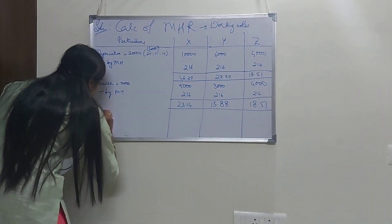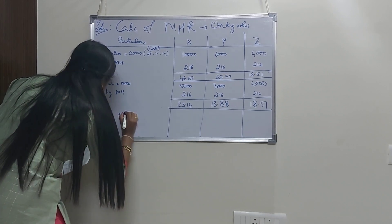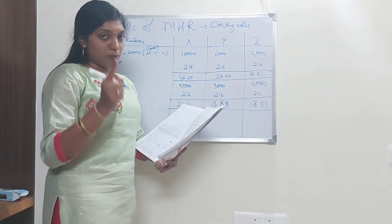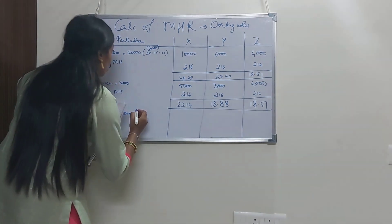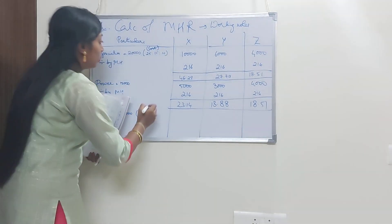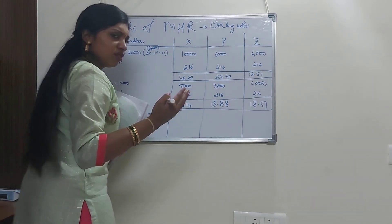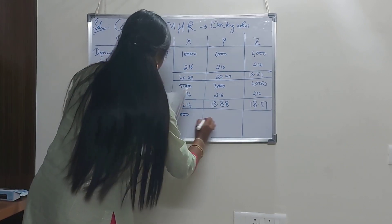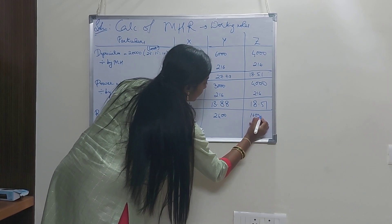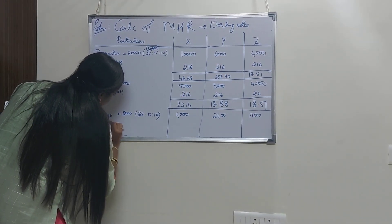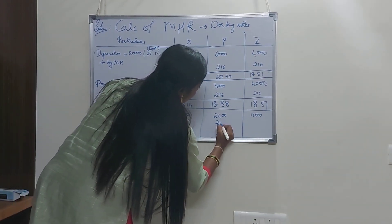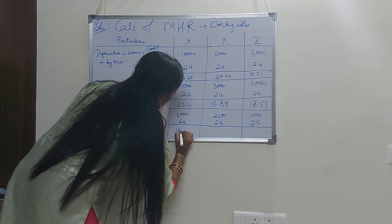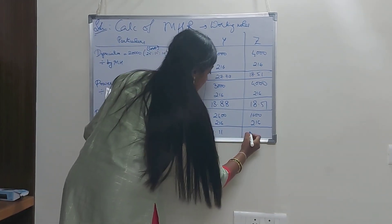Next, repairs. The total amount for repairs is 8,000 rupees. Repairs are apportioned on the basis of cost of machine — same ratio as depreciation: 25:15:10. You can use the simplified ratio as well. So the amounts are 4,000, 2,400 and 1,600. Divide by machine hours of 216 each. Per hour repair rate stands at 18.51, 11.11 and 7.40.